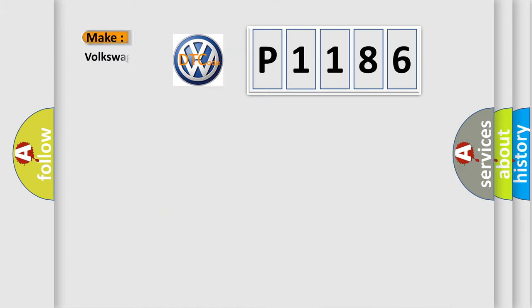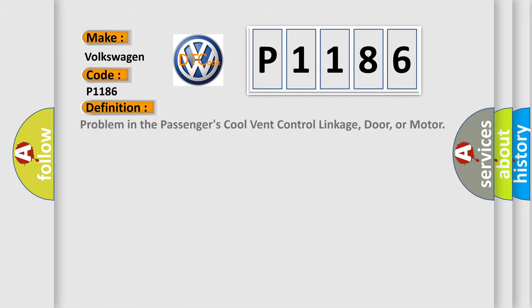So, what does the diagnostic trouble code P1186 interpret specifically? Volkswagen car manufacturer. The basic definition is problem in the passenger's cool vent control linkage, door, or motor.